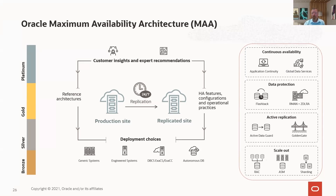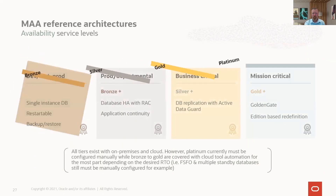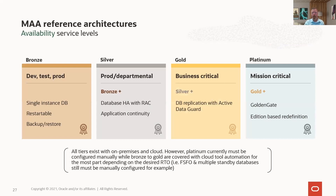Depending on your deployment choice, we've done some of this for you. On generic or engineered systems you follow our guidelines — Exadata takes care of some of this. As you get into our cloud with DBCS, ExaCS, or Exadata Cloud at Customer, we do more for you. And finally all the way to autonomous, where autonomous data guard lets you set up a standby and disaster recovery database in literally two clicks. The bronze tier is for dev/test and lower-level production, maybe internal applications — just a single instance running, restartable, with backup and recovery. Bronze is the starting point.